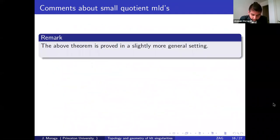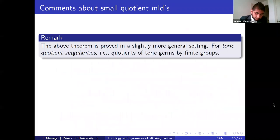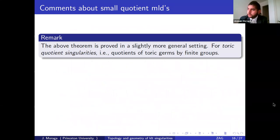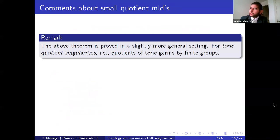The above theorem is actually proved in the paper in a slightly more general setting — it's true for toric quotient singularities, meaning quotients of a toric singularity by a finite group. Of course quotient singularities are toric quotients, but not all toric quotients are quotient singularities — for instance, an involution acting on the rational double point gives a toric quotient that is not a quotient singularity.